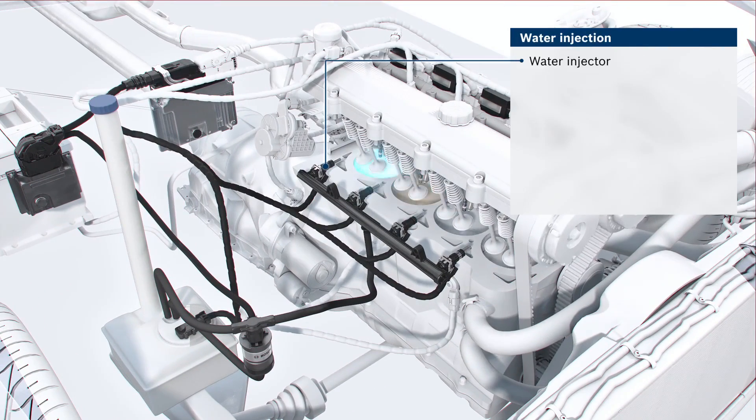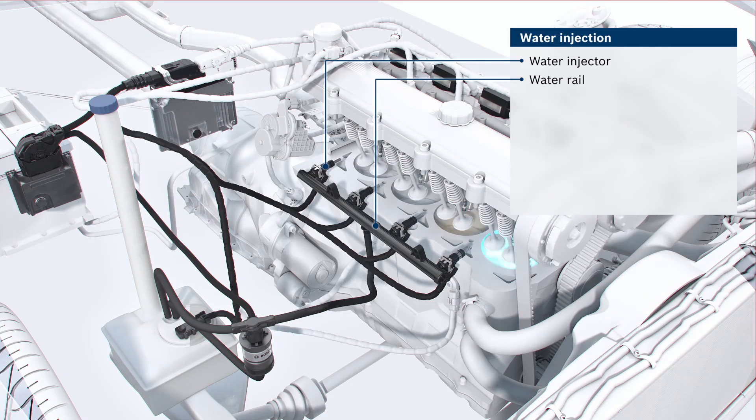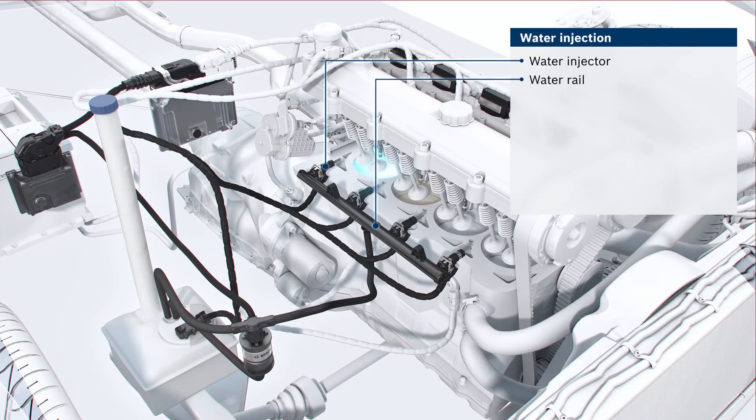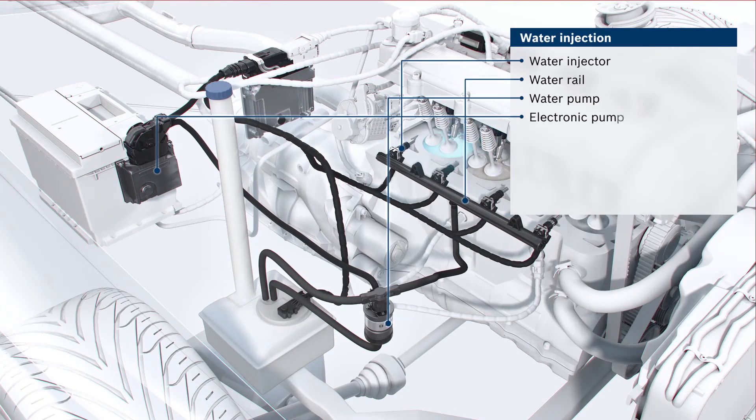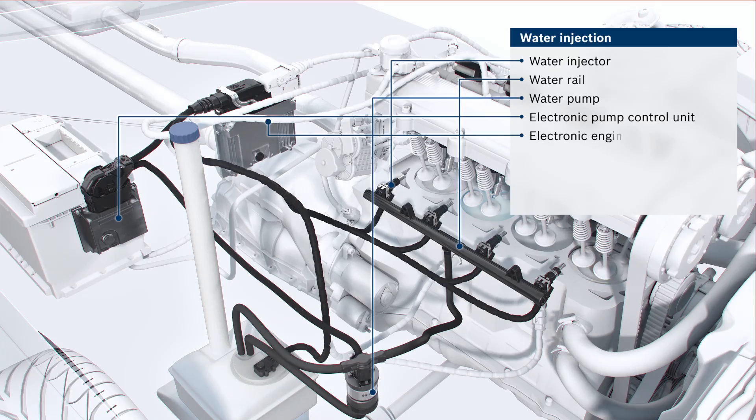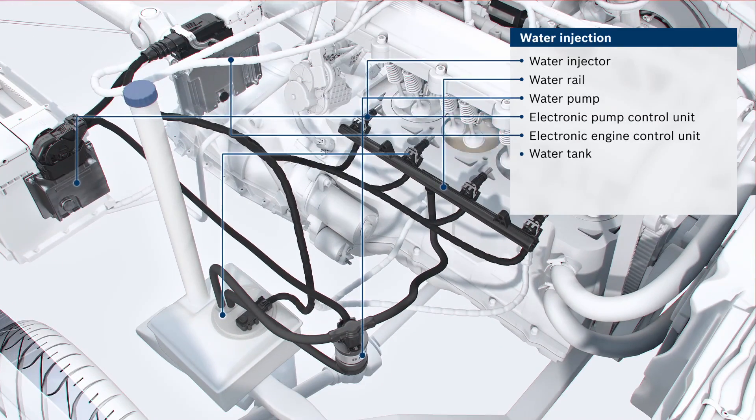Besides the water injector and the water rail, the system contains further components: a water pump, an electronic pump controller, an electronic engine control unit for the entire system, and a water tank.